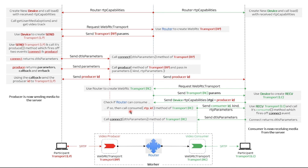If all is good, we call the consume method of the server-side consumer transport, passing in the RTP capabilities and the producer ID. This returns the server-side consumer and sends back to the client the created consumer's ID as well as a couple of other parameters. We then call the consume method of the local receive transport. This fires off the transport connect event, which returns the DTLS parameters. We send these DTLS parameters back to the server and call its corresponding connect method passing in the parameters. By this time, media should have started streaming from the producer to the consumer.